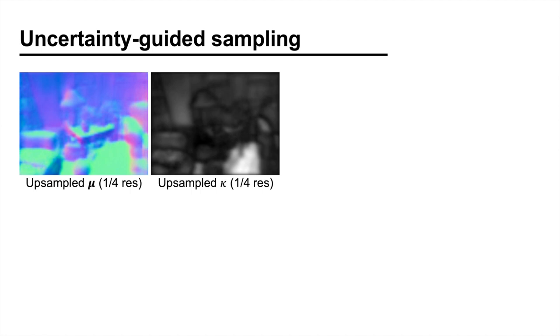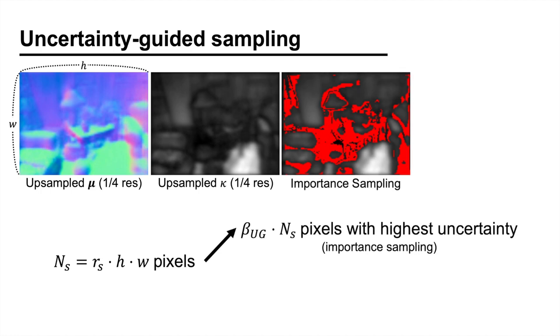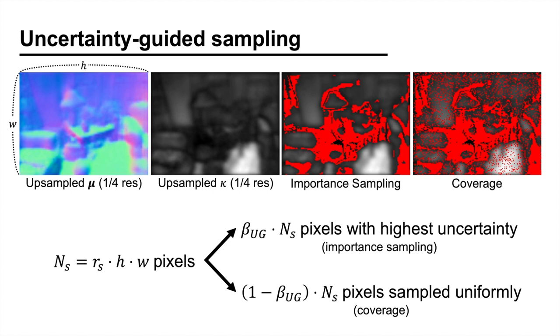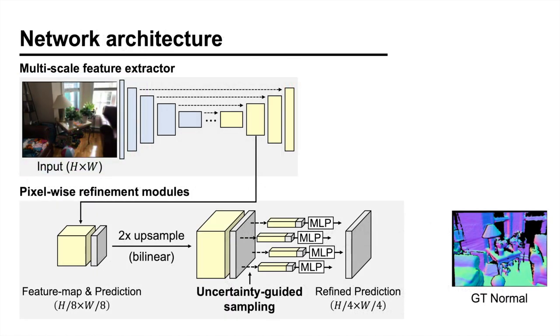The sampling procedure is straightforward. The number of pixels in the upsampled prediction is h times w, and we will sample a certain proportion of those pixels. Firstly, we sample the pixels with the highest uncertainty. Then, we also add some uniformly sampled pixels to make sure that the low-uncertainty pixels on large surfaces are also used during training. The training loss is computed only for the sampled pixels, and this process is repeated until reaching the desired resolution.